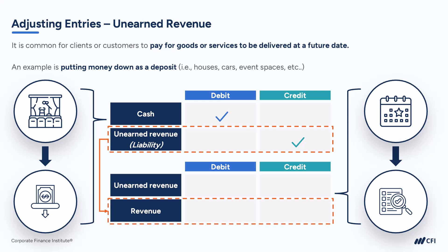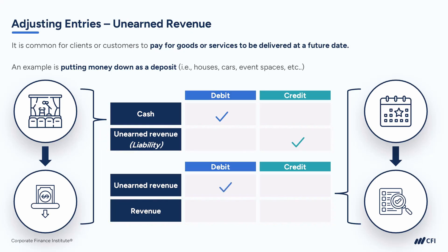After conducting this type of assessment, any revenue that has been earned would be taken out of unearned revenue — that's a debit — and moved to revenue on the income statement, which is a credit.